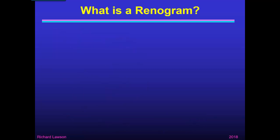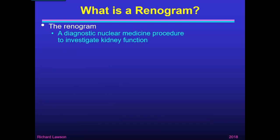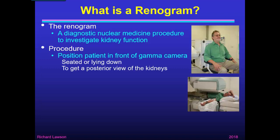So, first of all, what is a renogram? It's simply a diagnostic nuclear medicine procedure that we use to investigate kidney function. To perform a renogram, the patient is positioned in front of a gamma camera — they may be seated or lying down depending on the facilities of the gamma camera used — and the aim is to get a posterior view of the kidneys.